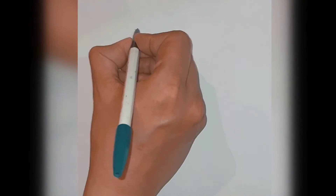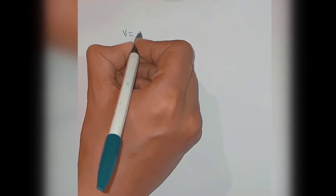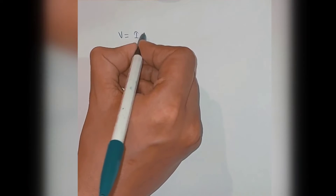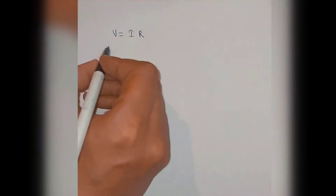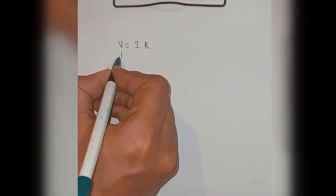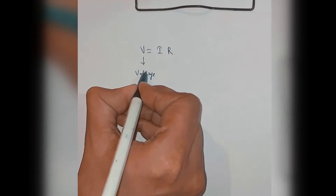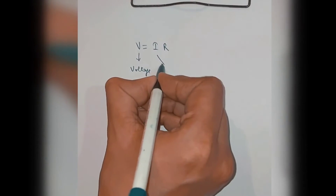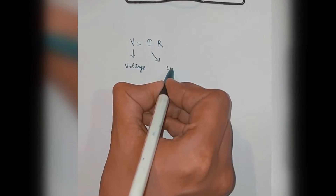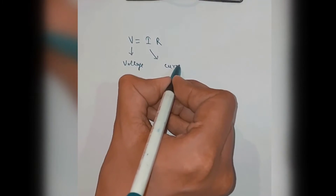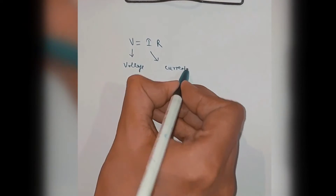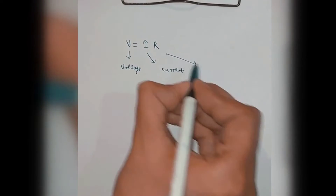For this, you have to keep a formula in mind: V equals IR. Here, V is voltage, I is current, and R is resistance.